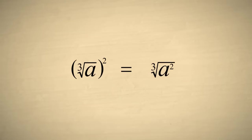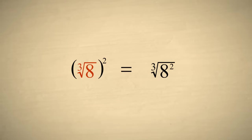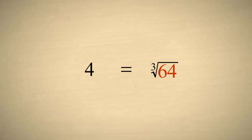It may seem strange that both these operations give the same result. However, if we pick a value for a which comes out even, it is easier to see why this is true. For example, let's say that a is equal to eight. Now on the left side, the cube root of eight is two, and two-squared is four. While on the right side, eight-squared is sixty-four, and the cube root of sixty-four is also four.